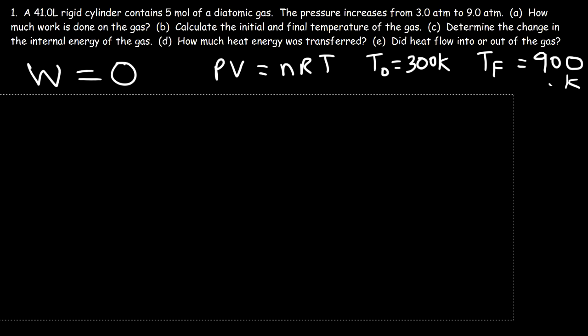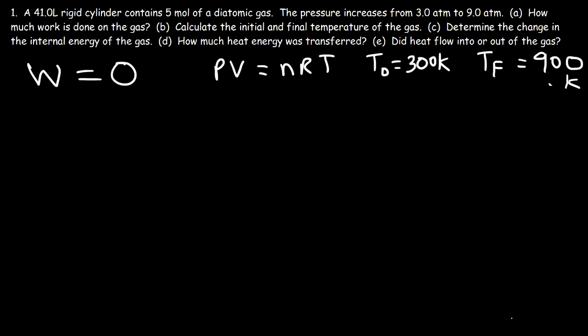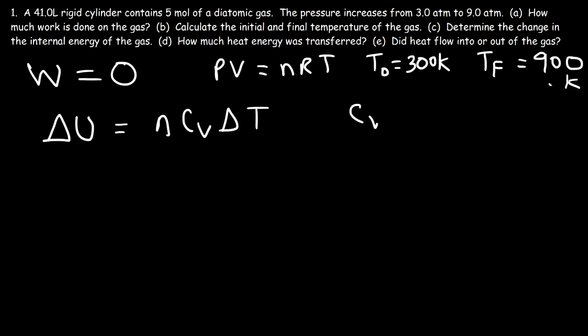Now part C: determine the change in internal energy of the gas. Any time you want to calculate the change in internal energy for any process, it's equal to n·cv·ΔT. For a diatomic gas, you need to know that cv, the molar heat capacity at constant volume, is equal to 5/2 · R.